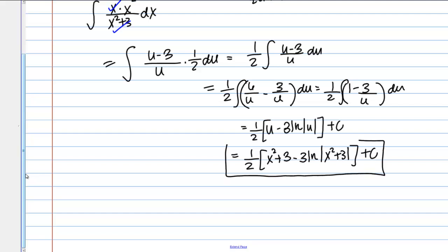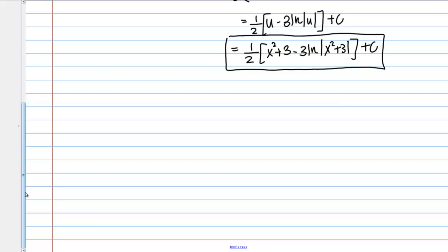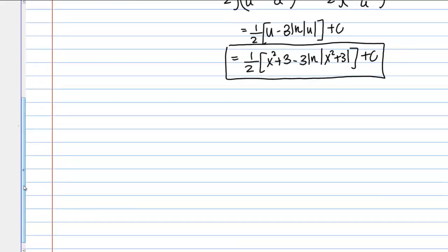Let me mention that this answer can be simplified slightly, which matters if you're checking against a provided answer. The term one-half times 3 is just a constant with no x in it, so it can be absorbed into the constant c. You might see this written as one-half times x squared minus 3 natural log of x squared plus 3, plus c. Both forms are correct.